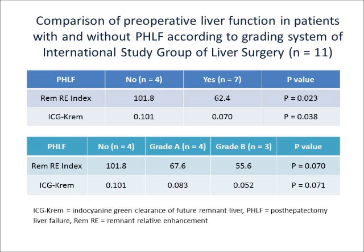The remnant RE index of patients without PHLF was significantly higher than that of patients with PHLF. Also, there were significant differences between patients with and without PHLF with respect to ICG-K-REM. However, there were no significant differences between patients without PHLF, grade A patients, and grade B patients with respect to the remnant RE index and ICG-K-REM. The data was analyzed retrospectively and the sample size was relatively small, especially in patients after radical surgery, so we could not discriminate between patients without PHLF and patients with each grade of PHLF according to the grading system.